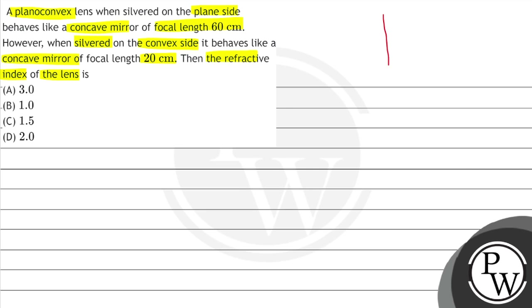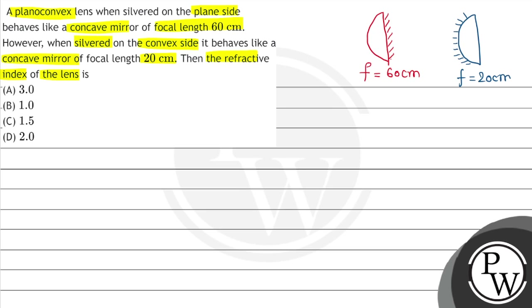Here we have a plano-convex lens, meaning one side is plane and one side is convex. When the plane side is silvered, it acts as a concave mirror of focal length 60 cm. In the second case, when the convex side is silvered, it behaves like a concave mirror of focal length 20 cm.